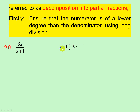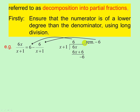So we say x plus one into 6x. x into 6x gives you 6. Multiply: 6x plus 6. Change the sign on the bottom line and add — we get minus 6, and we can't divide further, so that is our remainder. Therefore 6x over x plus one equals 6 minus 6 over x plus one. We leave the remainder for somebody else to do.